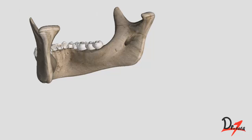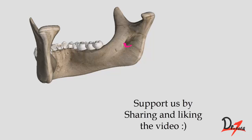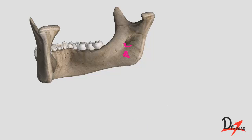A thin bony projection called the lingula arises from the anterior medial margin of the mandibular foramen. Below the foramen, a groove extends downward — the mylohyoid groove — which carries the mylohyoid vessels and nerve.